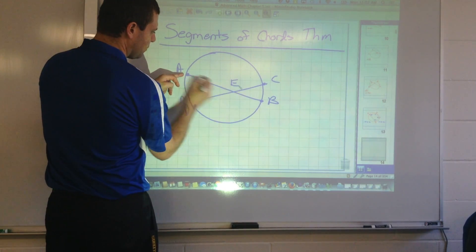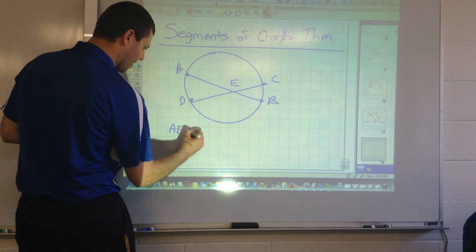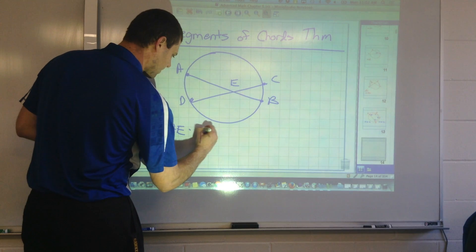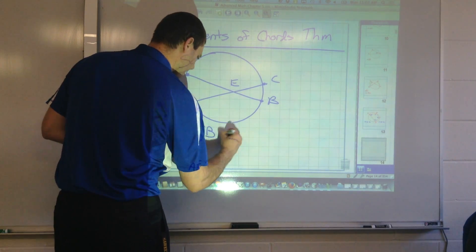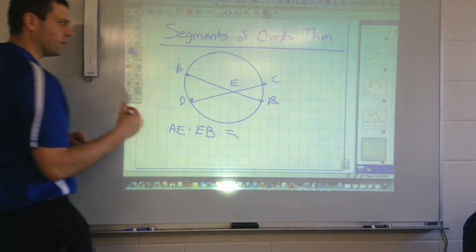Alright, but if you take the distance from A to E and you multiply that by the distance from E to B, you will always get the exact same number if you did the other one as well.